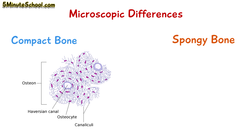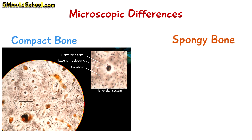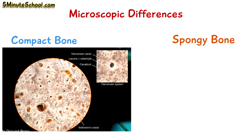Each osteon has a layer of compact bone tissue called lamellae. These lamellae layers surround a central canal called the Haversian canal, which provides the blood supply to the area. The osteoblasts and osteocytes surround the Haversian canal in a circular pattern, and the spaces in which these osteocytes and osteoblasts are located are called lacunae. In the diagram we can also see Volkmann canals, which are canals that connect the osteons together.